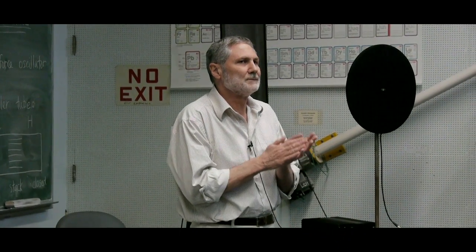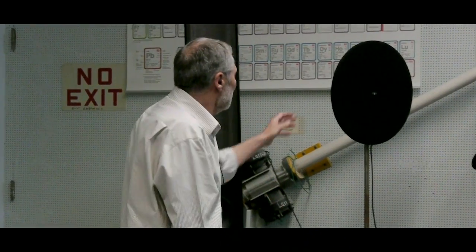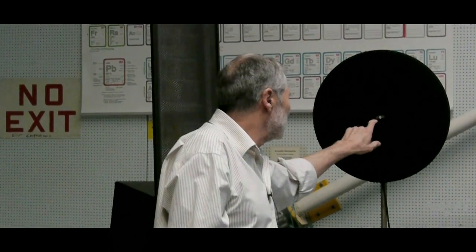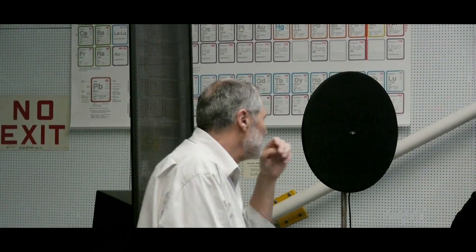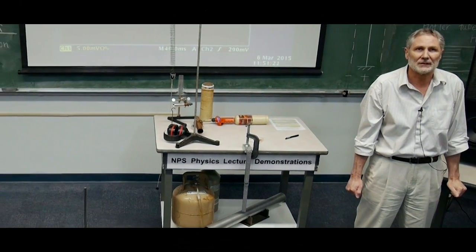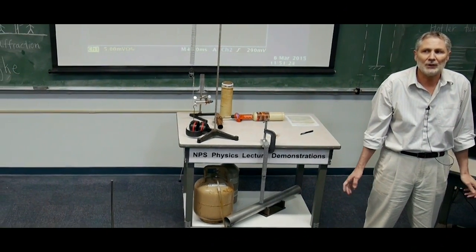This device is called an audio spotlight, and it costs about two thousand dollars — paid for by your tuition. It has transducers, small discs that generate sound, and it puts out sixty-five kilohertz. That's sixty-five thousand hertz. How high can humans hear?